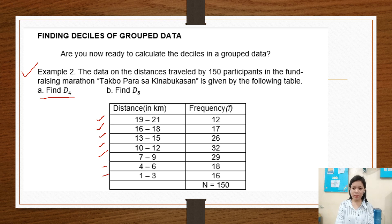The frequencies are: 19 to 21 is 12, 16 to 18 is 17, 13 to 15 is 26, 10 to 12 is 32, 7 to 9 is 29, 4 to 6 is 18, and 1 to 3 is 16. The total frequency N is equal to 150.